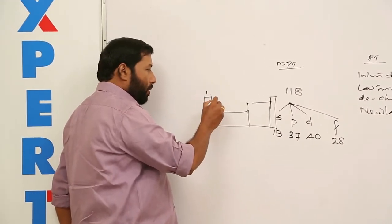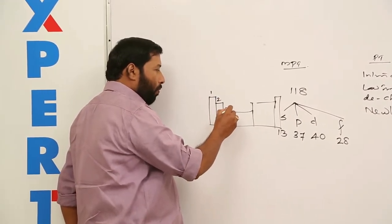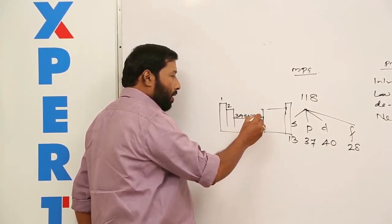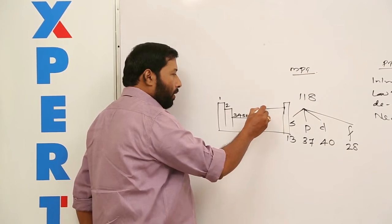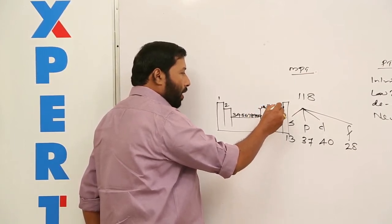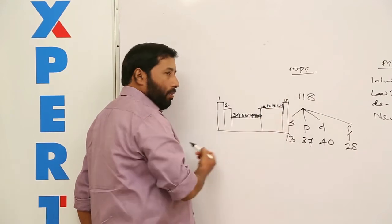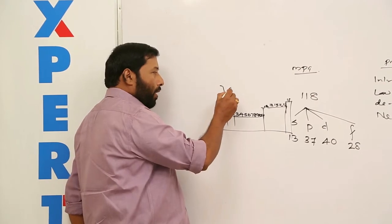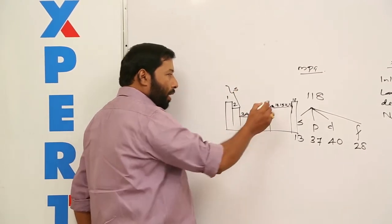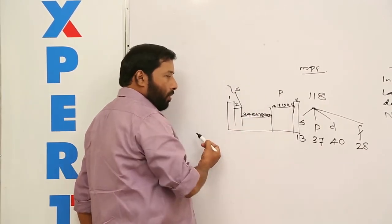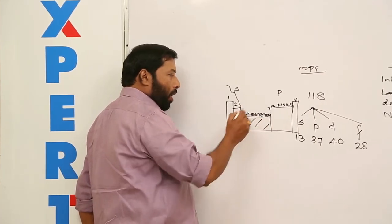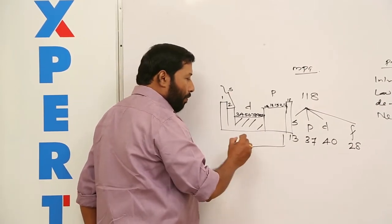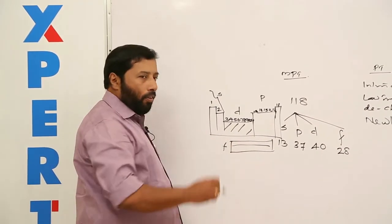The periodic table has 18 groups: first through eighteenth. The left extreme of the main body is covered by S block. The right portion is covered by P block. In between S and P is a section known as D block, and a body separated from the main body of the table is known as F block.